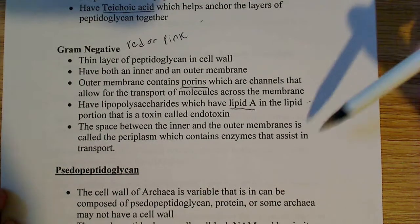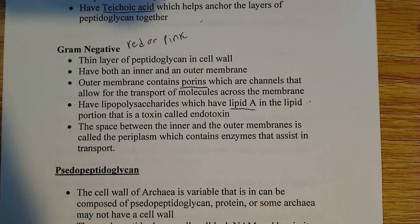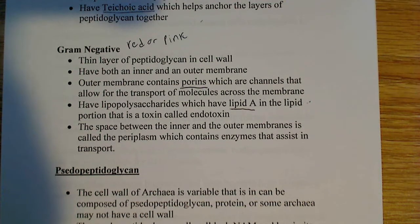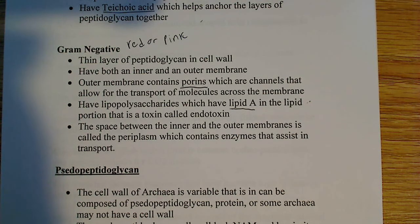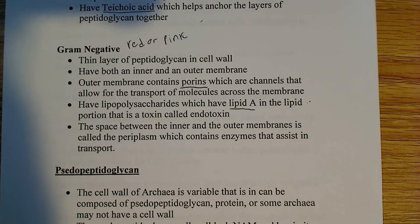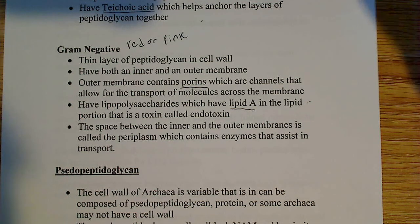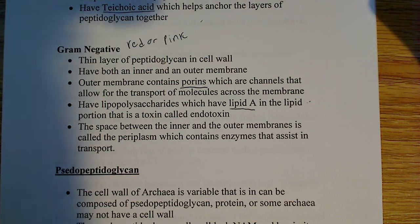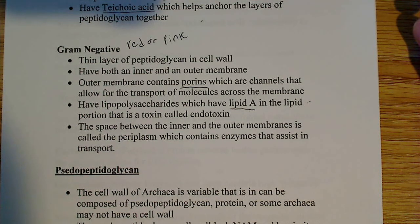With two membranes — inner and outer — and a thin layer of peptidoglycan in the middle, gram-negative bacteria also have a space between the inner and outer membranes called the periplasm, which contains enzymes that assist in transport. This is another important difference you'd need to know if asked to name or explain the differences between gram-positive and gram-negative on an exam.